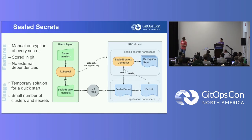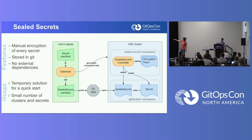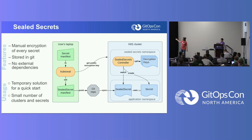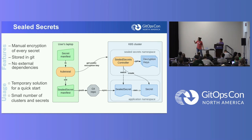First solution: Sealed Secrets. It has two parts. First, the kubeseal CLI tool — you encrypt your secrets with this common tool. Second, the Sealed Secrets controller — it decrypts stuff. So you encrypt here, decrypt there. It uses custom resources, so you need to install CRDs in your cluster.